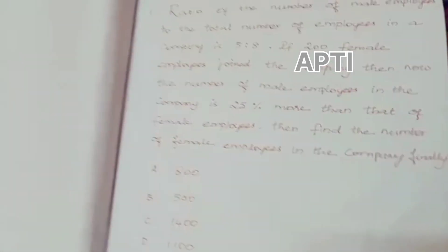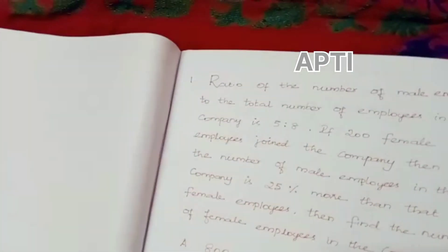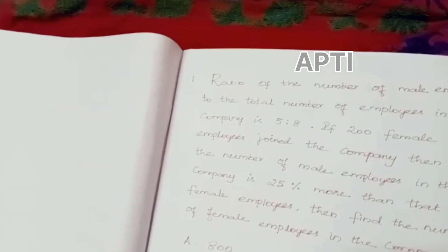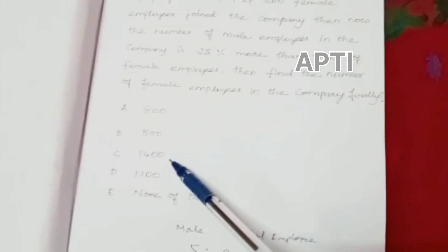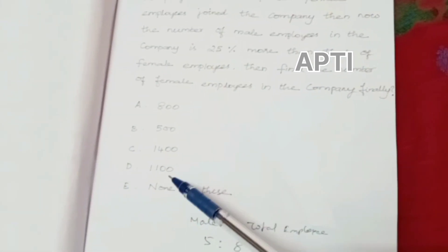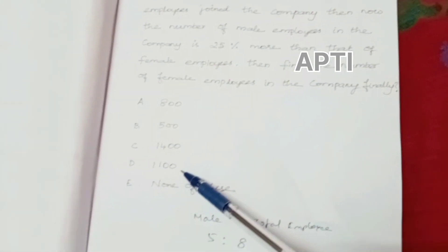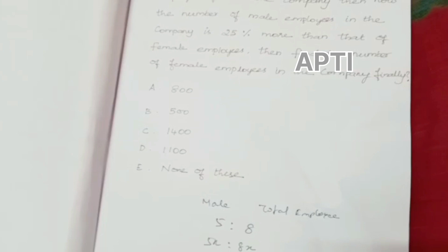We can also apply a logical trial and error method using the equation formula. The options are: A) 800, B) 500, C) 1400, and D) 1100.